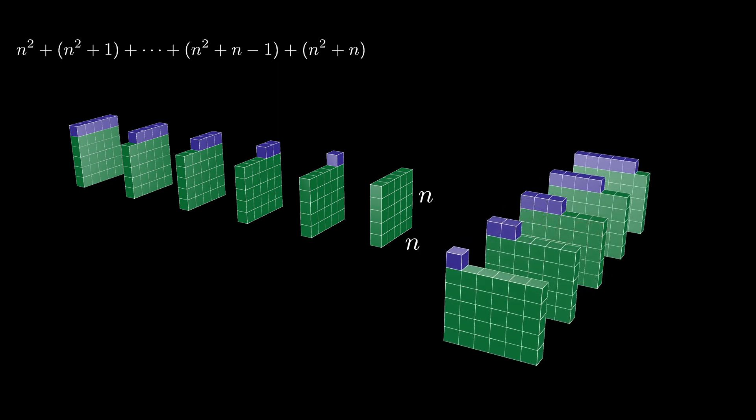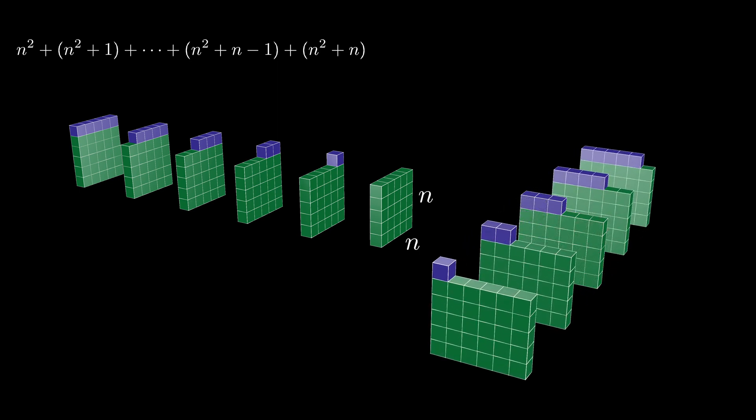On the other hand, if we separate the structure vertically, we end up with rectangular arrays of the size n plus 1 by n with cubes on top. So there's a total of n squared plus n plus 1 up to n squared plus n plus n total cubes on the right side.